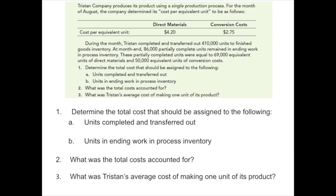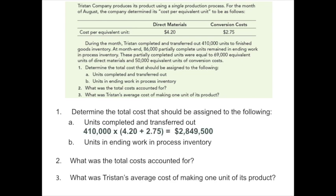The first thing we want to do is determine the cost assigned to units completed and transferred out. The 410,000 units transferred to finished goods, at $4.20 per materials plus $2.75 per conversion — taking the total cost per unit and multiplying by units completed — gives us a total cost of $2,849,500 assigned to units completed and transferred out.